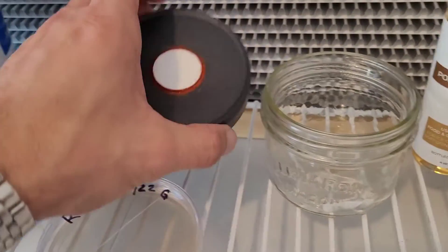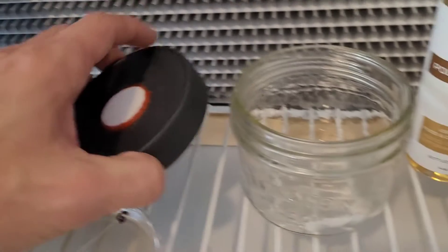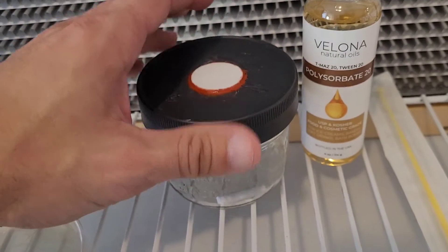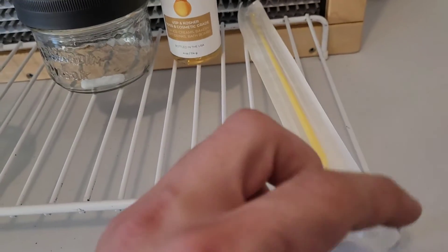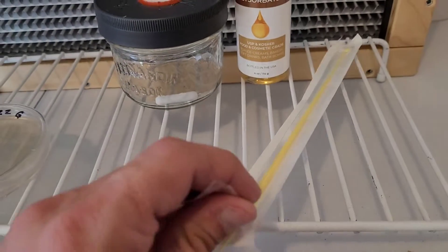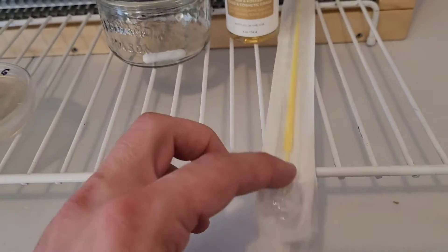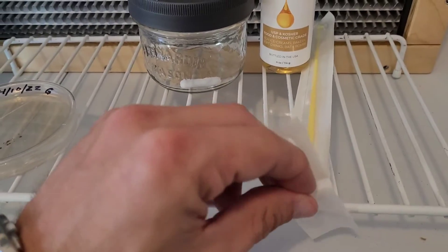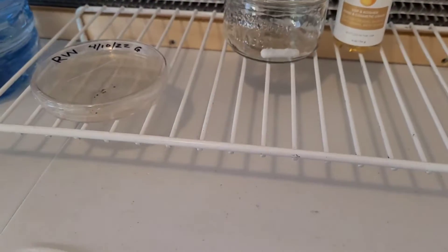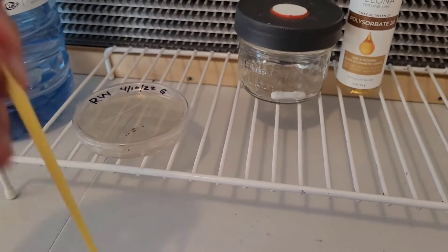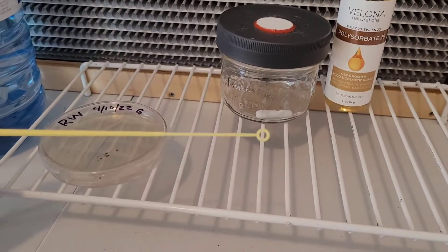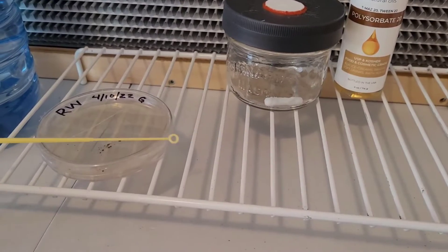As always, I'm using this ball leak-proof lid with a synthetic filter disc on top. And afterwards, once I've given about 24 hours for this to rehydrate, I'm going to be using one of these 10 microliter disposable inoculation loops for streaking new plates.